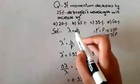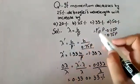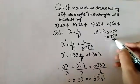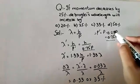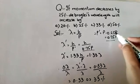Lambda is equal to h over p. According to the condition, p' is equal to 0.75p, because p decreases by 25%, which is p minus 0.25p.